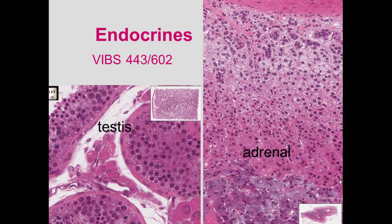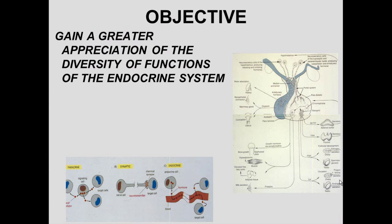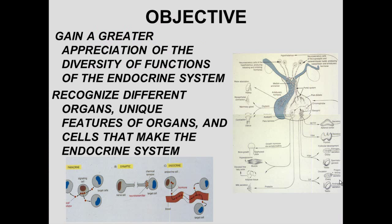Today we'll be talking about the endocrine system. The endocrine system has a lot of organs associated with it, including feedback mechanisms with the pituitary and hypothalamus. We'll talk about the various organs — there are so many that we're going to divide them into two groups. We'll start with the pituitary and gain a greater appreciation for the diversity of functions of the endocrine system.